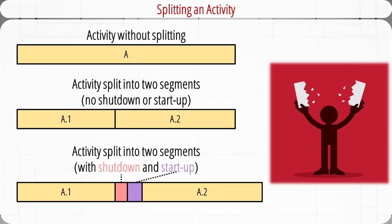So far, we have been assuming that an activity cannot be split when scheduling — once started, it is carried to completion. We do this for the sake of simplicity. In real-world projects, some activities can be split into multiple sections. For example, building a three-mile road can be split into three one-mile sections. Splitting is a scheduling technique for creating a better project schedule and increasing resource utilization.